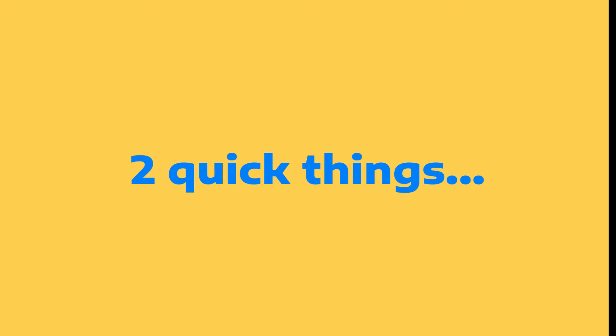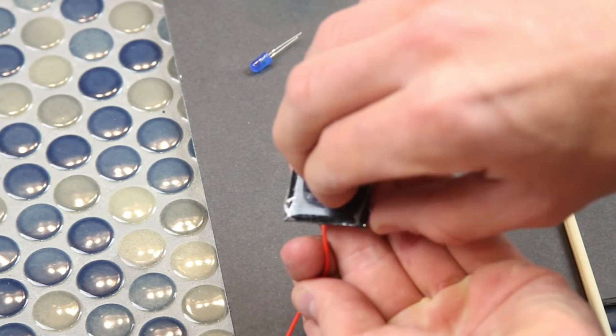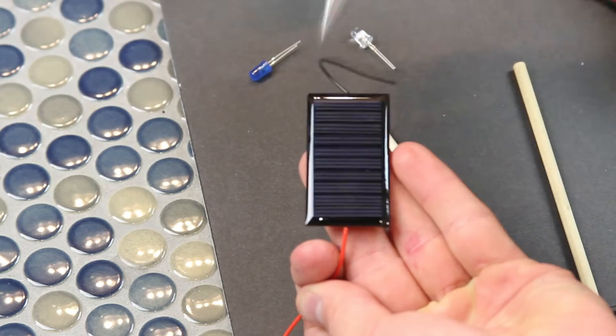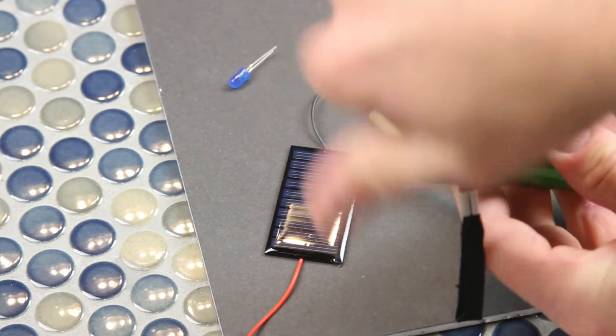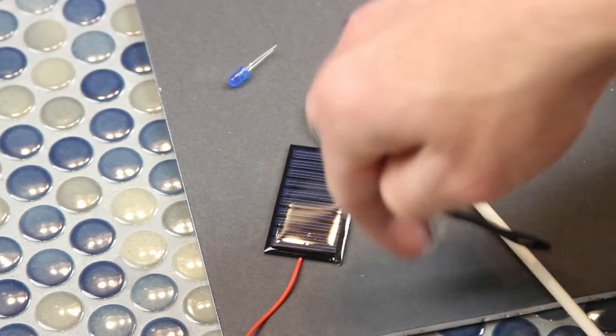Before we officially get started, there's two quick things. Number one, peel a little film off the solar panel. And also, unscrew the back end of the flashlight and take that little piece of film out too.